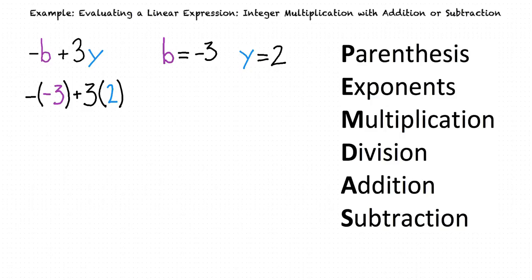Next, we'll evaluate any multiplication in our expression. The negative sign next to negative 3 is equivalent to multiplying negative 3 by negative 1. So we can simplify that term to positive 3.